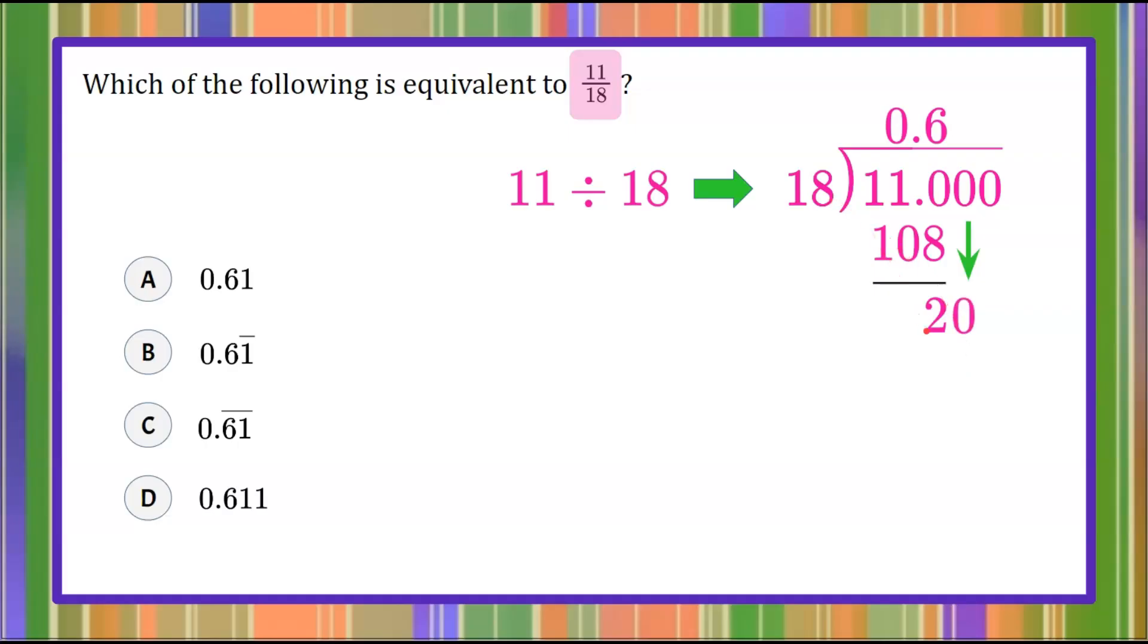18 goes into 20 one time. 1 times 18 is 18. 20 subtract 18 is 2. Bring down another zero, and we know that 18 is going to go into 20 one time. 1 times 18 is 18. 18 we subtract, we get 2.